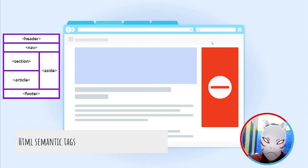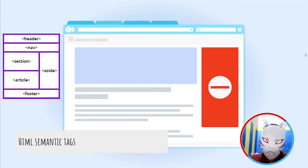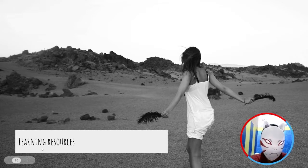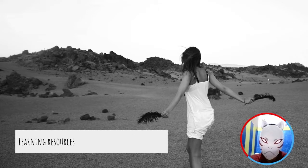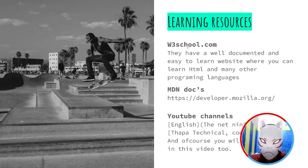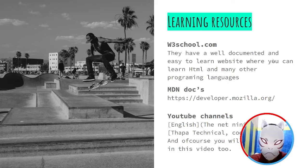The aside tag is used when we want to provide something that's not as important — we place it aside. I will be providing learning resources in the description. The first major resource is W3Schools — they have a very well-documented and easy-to-learn website where you can learn HTML.